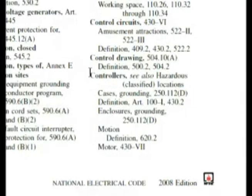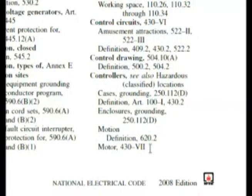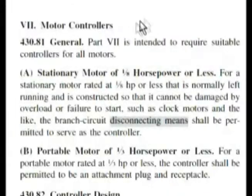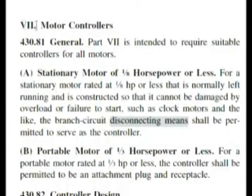Here we are at controllers, and if we look at controller's motor, it gives us 430 Roman numeral 7. So let's look there. Here we are at motor controllers, and it was 430 Roman numeral 7. So we could look at our bold headings and start reading through.